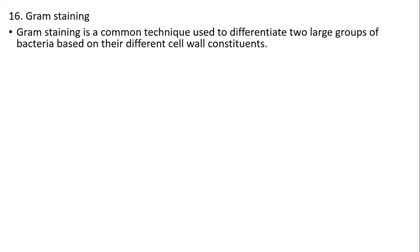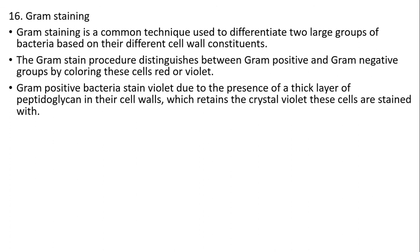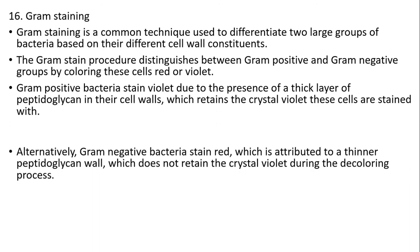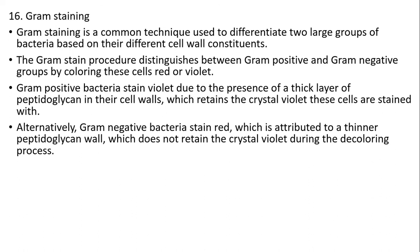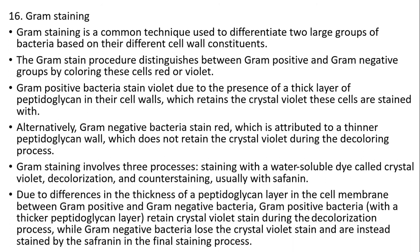Gram stain: Gram staining is a common technique used to differentiate two large groups of bacteria based on different cell wall constituents. The Gram stain procedure distinguishes between Gram-positive and Gram-negative groups by coloring them red or violet. Gram-positive bacteria stain violet due to the presence of a thick layer of peptidoglycan in the cell walls, which retains the crystal violet dye. Gram-negative bacteria stain red, attributed to the thinner peptidoglycan layer, which does not retain crystal violet during the decolorization process. Gram staining involves three processes: staining with a water-soluble dye called crystal violet, decolorization, and counterstaining — usually with safranin.